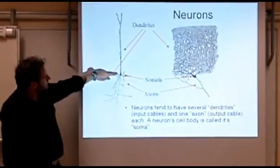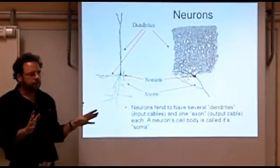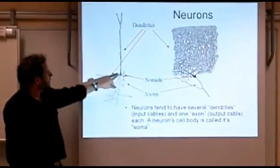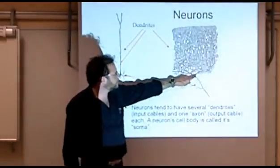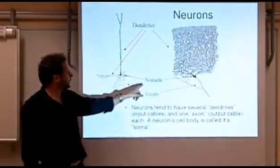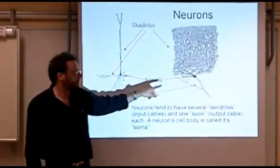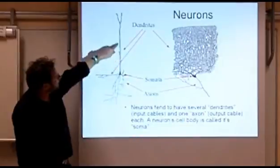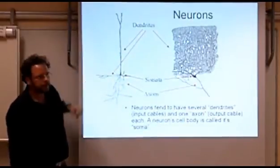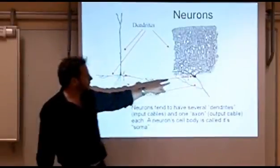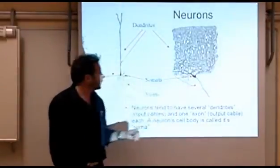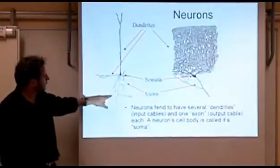And so a typical neuron, in as far as there is such a thing, will have one little body called its soma. The plural of soma is somata. It may have one or several dendrites growing out of it. And it will typically have one axon growing out of it. Only one. But this one axon that grows out of it can branch very heavily.